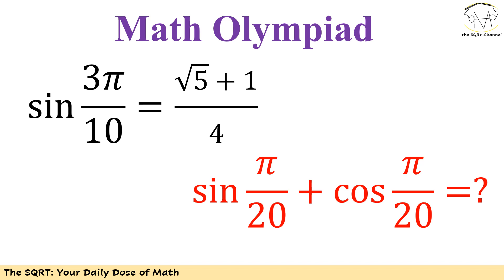Hello everyone, welcome to the Squirty channel. In this video I'm going to talk about a problem that you are seeing here. We are given sine of 3π over 10, defined as (√5 + 1) over 4. Based on this we need to find sine of π over 20 plus cosine of π over 20.